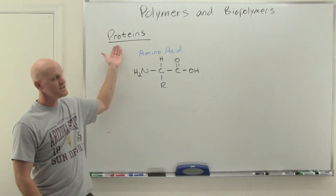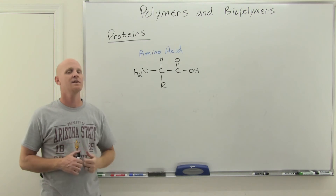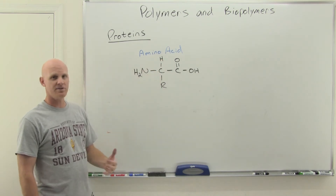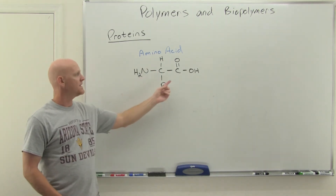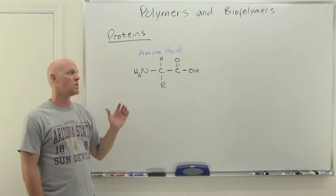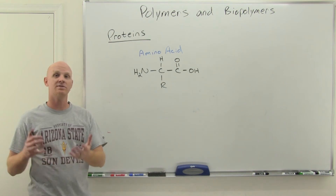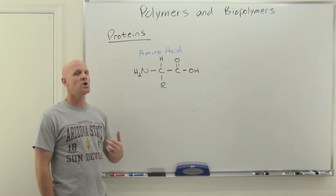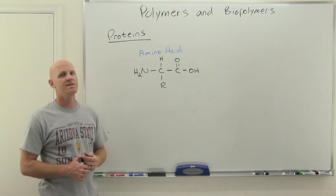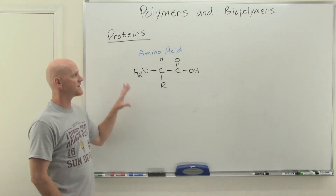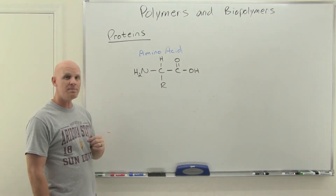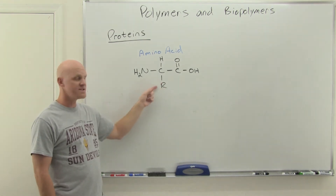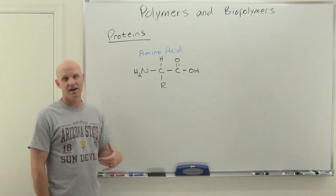The first biopolymer we're going to look at are proteins. The name of the monomer is an amino acid. You can see why they call it amino acid — we have an amine at one end and a carboxylic acid at the other end. We can connect them in big long chains in condensation polymerization reactions. It turns out the amino acids aren't all the same — there are about 20 incorporated into your body. The difference between them is just what's attached at the central carbon. In glycine it's just a hydrogen atom; in alanine it's a methyl group.